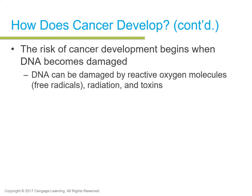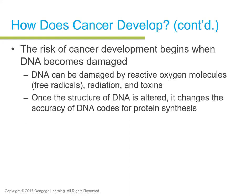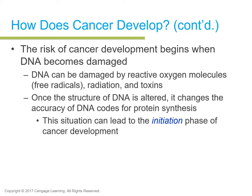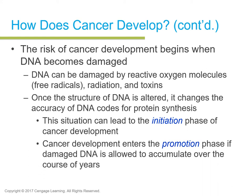DNA can be damaged by reactive oxygen molecules, producing unstable molecules called free radicals due to exposure to radiation and toxins. Once the structure of DNA is altered, it changes the accuracy of how DNA codes for protein synthesis. This situation can lead to a phase called the initiation phase, and if it enters a later stage — especially if damaged DNA is allowed to accumulate over years — it's called the promotion phase.